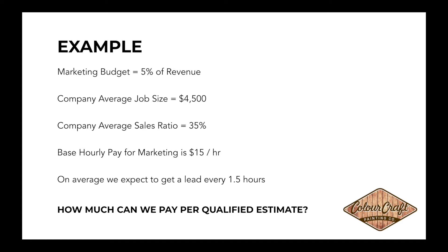The company's average sales ratio is 35 percent, and we want to be paying our marketing team — door-to-door marketers — $15 an hour. On average we can expect about a lead or an estimate every hour and a half that we're in the field marketing. The question is: with this information, how do you actually figure out the cost you can pay for a qualified estimate?